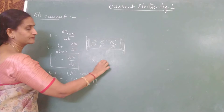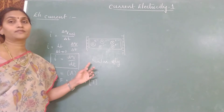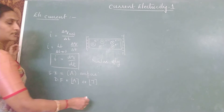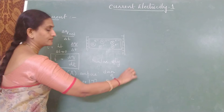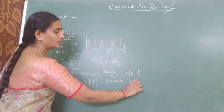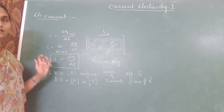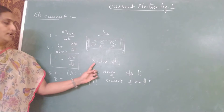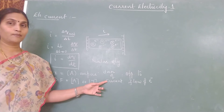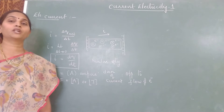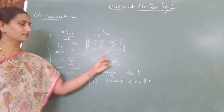Current is a scalar quantity. But remember it has a direction — the conventional direction of current is opposite to the flow of electrons. So if electrons move towards the positive plate, current flows in the opposite direction. Though current has a direction, it is a scalar because every quantity with a direction cannot be called a vector — it must obey the vector laws of addition. Since current does not obey the vector laws of addition, we call it a scalar quantity.